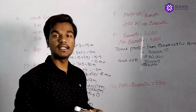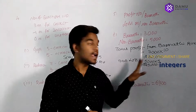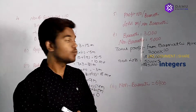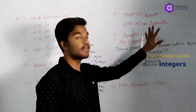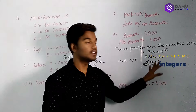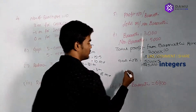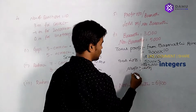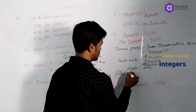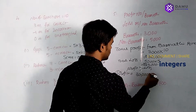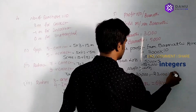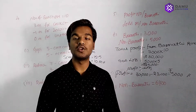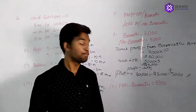He got profit of 30,000 rupees and loss of 25,000 rupees. Since profit is more than loss, the final profit is 30,000 minus 25,000, which is 5,000 rupees. So he got a profit of 5,000 rupees — 30 minus 25, that's why.